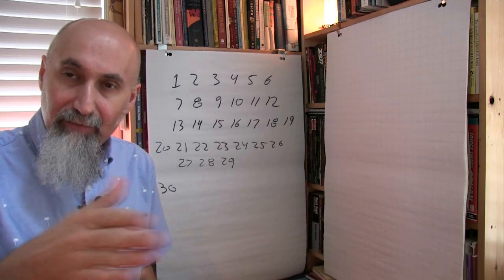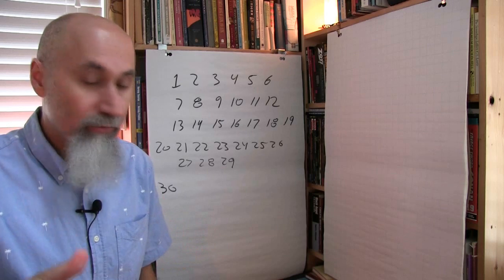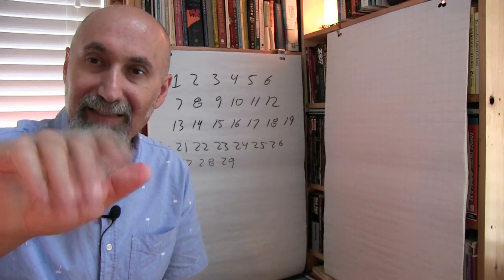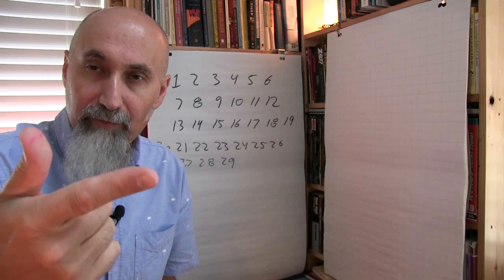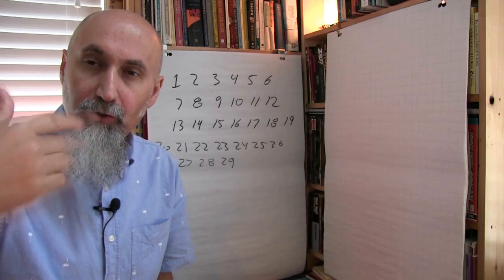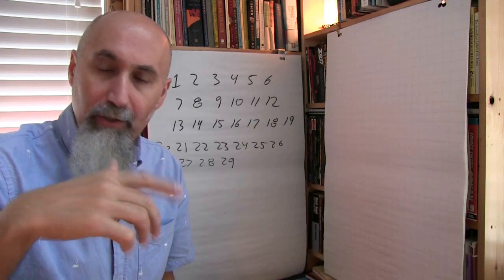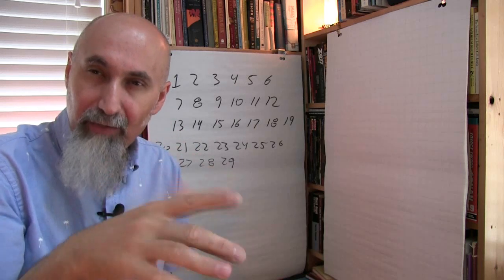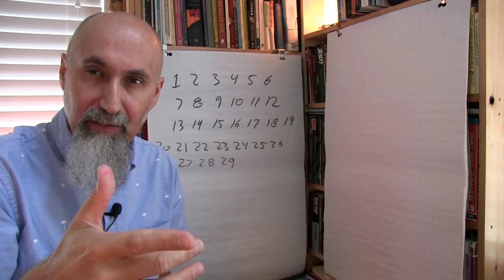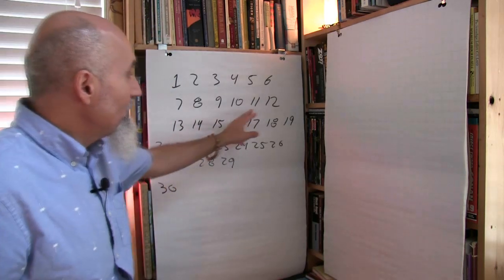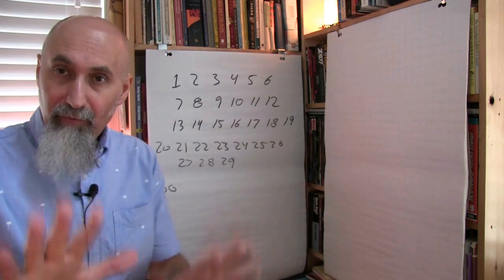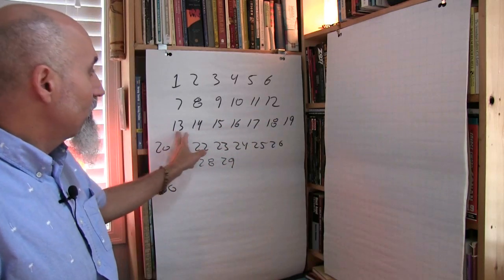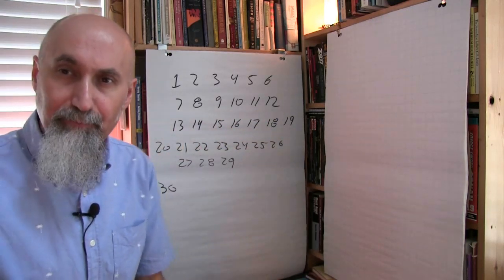The next set of counting goes from 1 all the way to 12 — introducing another hand into the counting process. Once they can do 12 without their fingers, you kick them into the teens: 1, 2, 3, 4, 5, 6, 7, 8, 9, 10, 11, 12, 13, 14, 15, 16, 17, 18, 19.